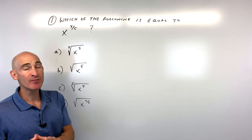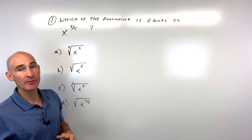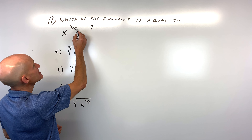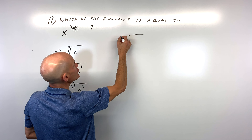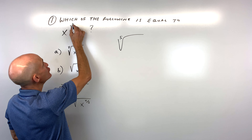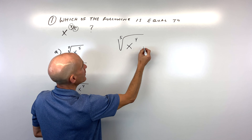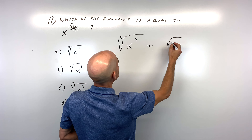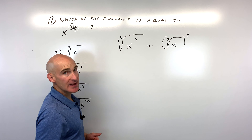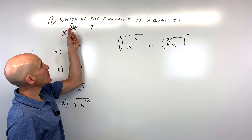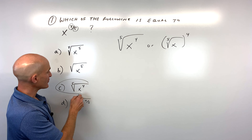The thing they're testing us on in this problem is that we know our rational exponents, basically fractional exponents. The key here is that the denominator is the root or the index, and the numerator is the power. They can put that power inside or on the outside — so they could say the fifth root of x to the fourth. If you remember: numerator is the power, denominator is the root, you've got it. So the answer is letter C.